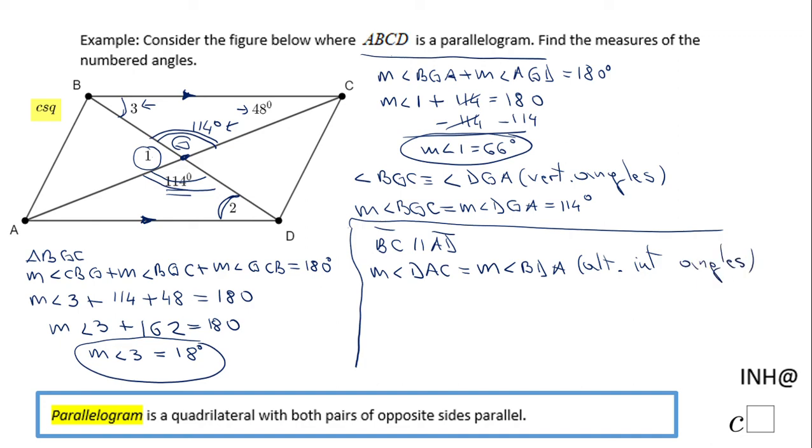If you notice, DBC—I'm sorry, I meant DBC here—DBC is the measure of angle 3, and BDA is the measure of angle 2. That means both are equal and they are 18 degrees.